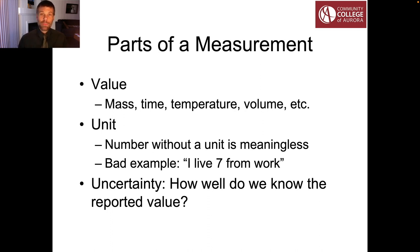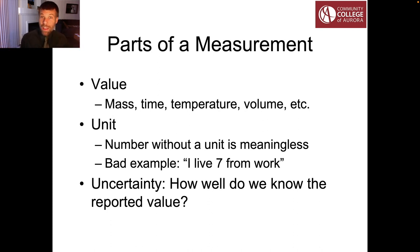Once I have a measurement with a value and a unit, I also need to know how well I know that number — and that's where uncertainty comes in. The uncertainty tells me how precisely I know the reported value. Depending on the quality of my digital multimeter, that number 17 could be good to 1 volt, 0.1 volt, or only 10 volts — so it's actually like 20 plus or minus 10, not 17. How well our instrument allows us to measure that value is what's expressed in uncertainty.